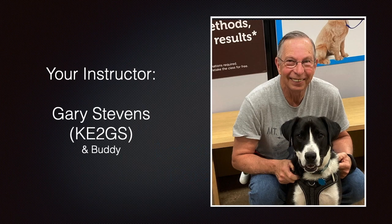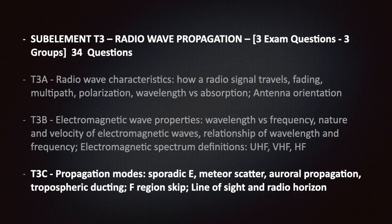I'm your instructor, my name is Gary Stevens and my call sign is Kilo Echo 2 Gulf Sierra. I hold an amateur extra license and I've been an amateur operator since 2001, an amateur extra since 2014, and teaching amateur radio for over 15 years. The T3 section covers radio wave propagation. On your exam, three questions are selected at random from this sub-element. There are three groups and a total of 34 questions. This video covers the third group, T3C: propagation modes, which includes sporadic E, meteor scatter, auroral propagation, tropospheric ducting, F-region skip, and radio horizon.